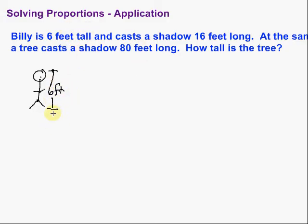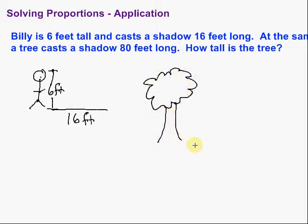Okay. Currently with the sun, Billy is casting a shadow that is 16 feet long. Okay. So we've got Billy. He's 6 feet tall. His shadow is 16 feet long. And I got a little cut off here. But at the same time, it's supposed to say, a tree casts a shadow that's 80 feet long. So over here we've got a tree. There's our tree. And the tree's shadow is currently 80 feet long. We want to know how tall the tree is.